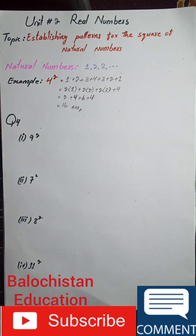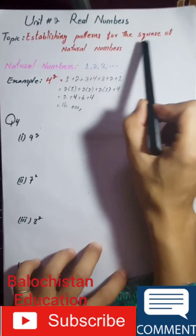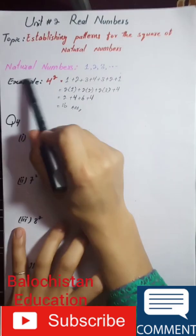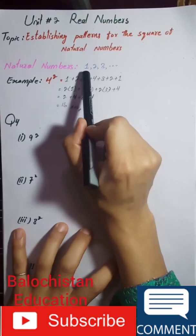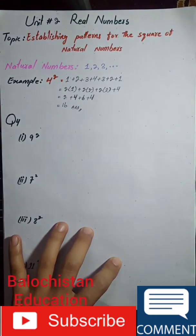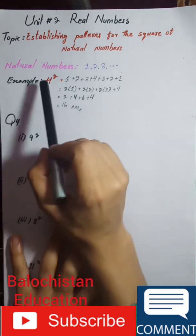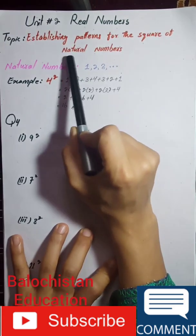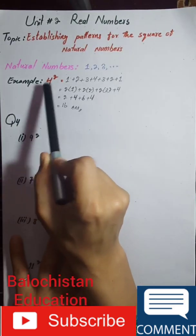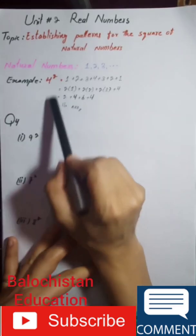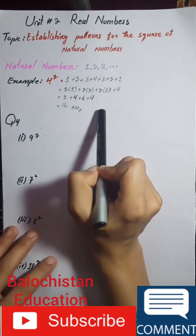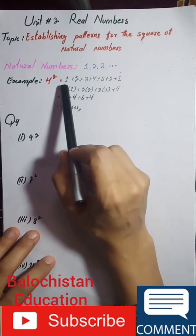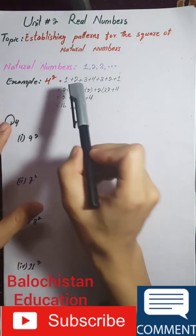The topic we are going to discuss today is establishing a pattern for the square of natural numbers. Natural numbers are the numbers which start from 1 and go on and on. For example, 4 — we have to establish a pattern for the square of natural number 4.